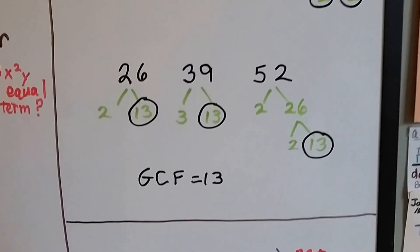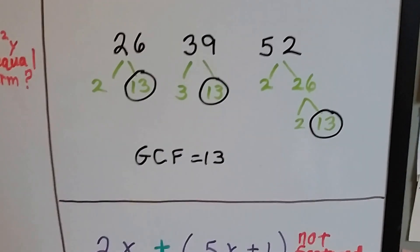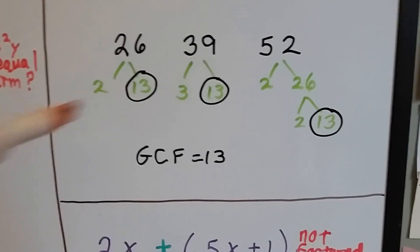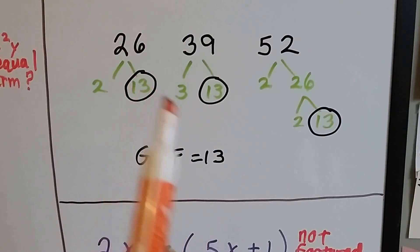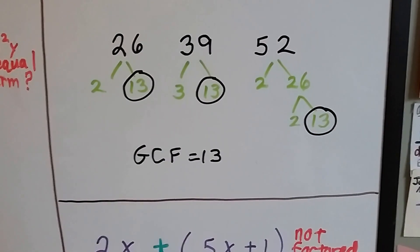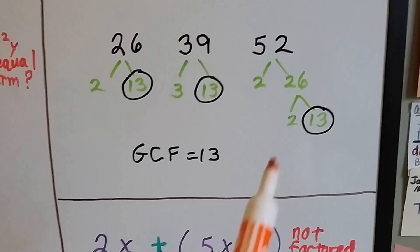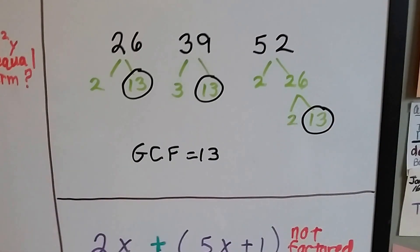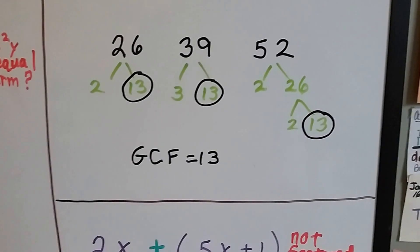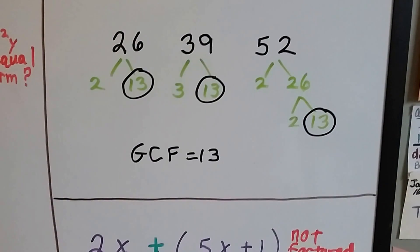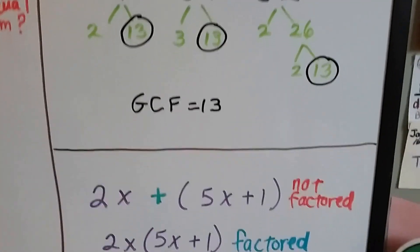Let's look at 26, 39, and 52. What's the greatest common factor for these three numbers? 26 can be broken into 2 times 13. 39 can be broken into 3 times 13, and 13 is a prime number so we can't go further. 52 can be broken into 2 times 26, and 26 can be broken into 2 times 13. So the greatest common factor is 13 for 26, 39, and 52. If you have to make these little trees, do it if it makes your life easy — just get some scratch paper and do it.